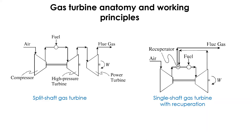More complex gas turbine configurations divide the compression and expansion into two stages with separate mechanical linkage — one between the low-pressure compressor and the low-pressure expander, and another between the high-pressure compressor and high-pressure expander in a twin-spool design. There are many versions of split shaft gas turbine available in the market.